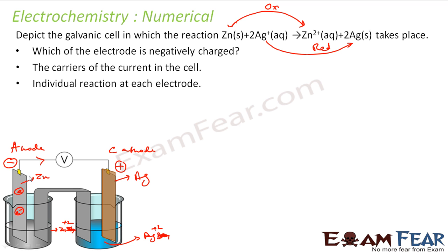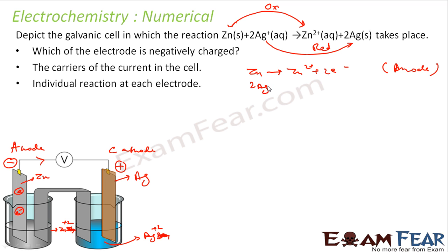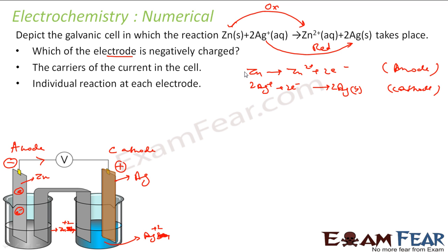The reaction at the anode is: Zn → Zn2+ + 2e⁻. The reaction at the cathode is: 2Ag+ + 2e⁻ → 2Ag (silver). Since the zinc electrode is losing electrons, it is the negatively charged electrode. So the answer to which electrode is negatively charged is: the zinc electrode.